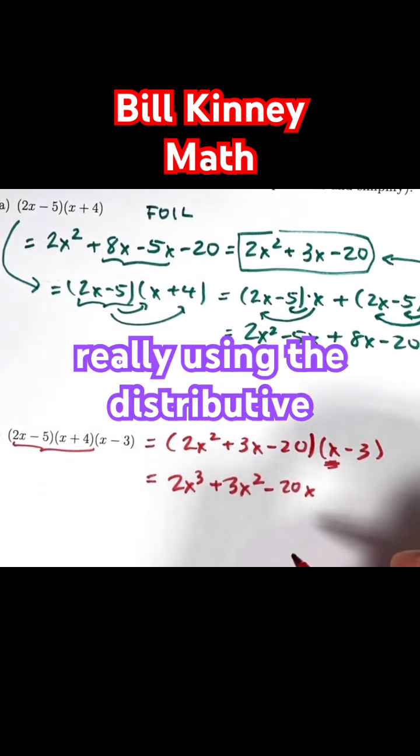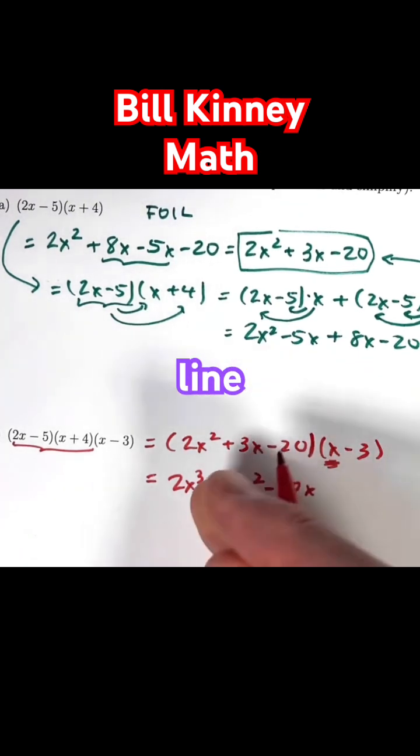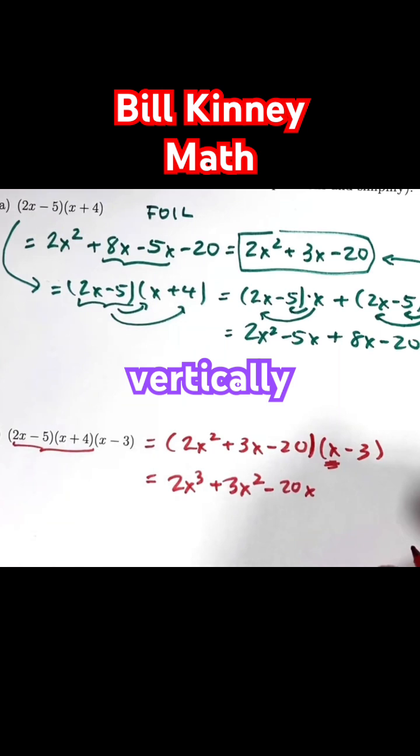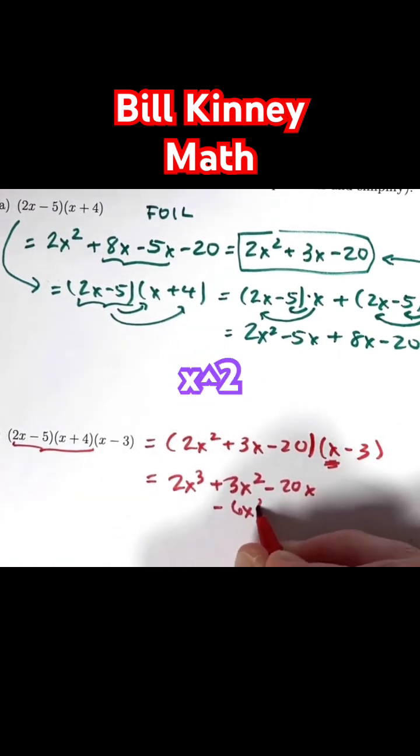Again, I'm really using the distributive property here. When I do that, I'll put it under the previous line, and I'll line up like terms vertically. Negative 3 times 2x squared is minus 6x squared.